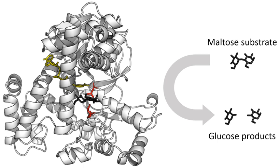Coenzymes are small organic molecules that can be loosely or tightly bound to an enzyme. Coenzymes transport chemical groups from one enzyme to another. Examples include NADH, NADPH, and adenosine triphosphate. Some coenzymes, such as flavin mononucleotide, flavin adenine dinucleotide, thiamine pyrophosphate, and tetrahydrofolate, are derived from vitamins. These coenzymes cannot be synthesized by the body de novo and closely related compounds must be acquired from the diet.